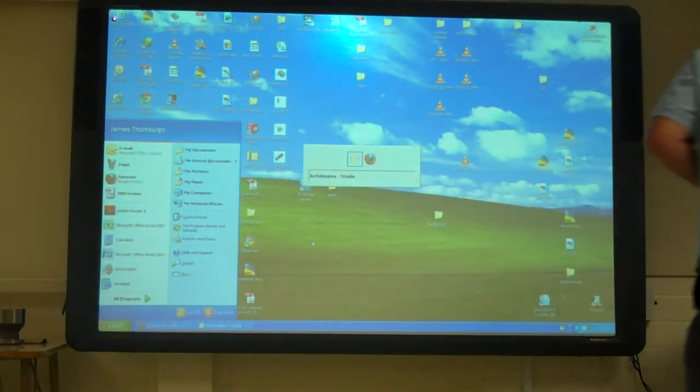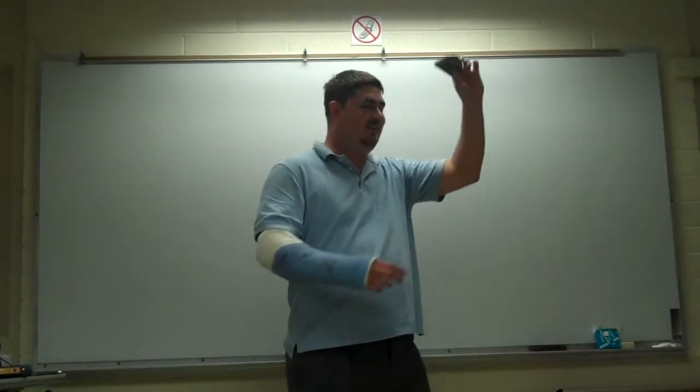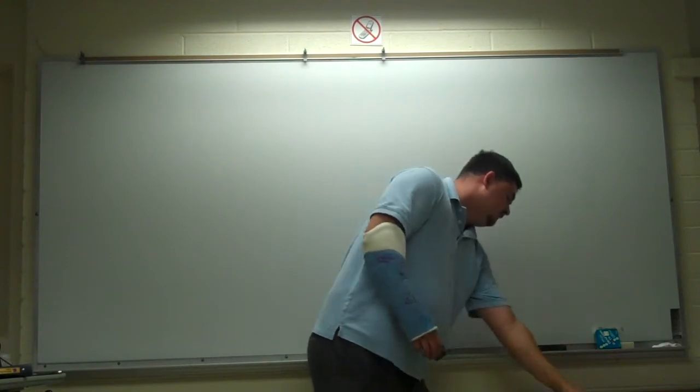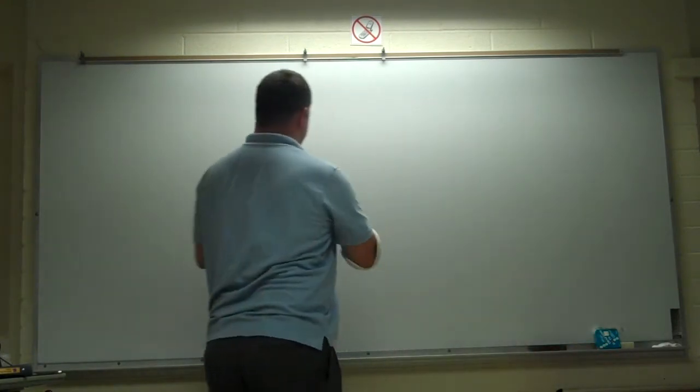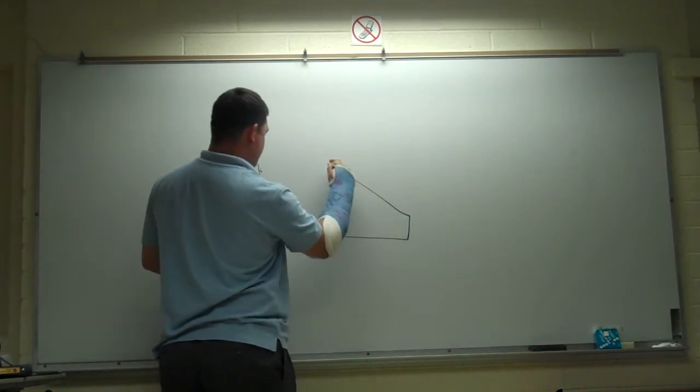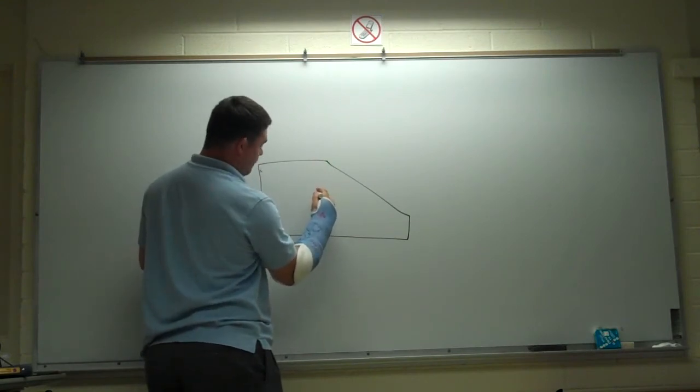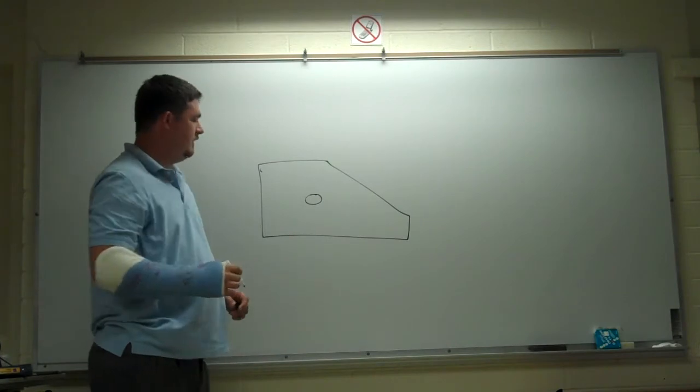And since this thing isn't wanting to work, we're going old school. So we're going old school. So we've got the block. So I'm going to draw out the front view. Put my hole in it, like that, right?